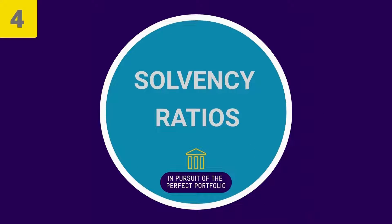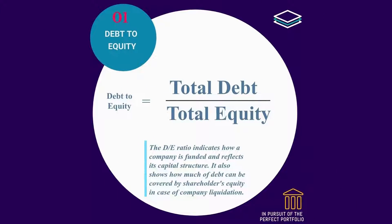Number 4: Solvency ratios. Debt-to-equity ratio is simply equal to total debt divided by total equity. A ratio greater than 1 indicates that the company has more debt capital in comparison to equity share capital, and vice versa. The debt-to-equity ratio indicates how a company is funded and reflects its capital structure. It also shows how much of the debt can be covered by shareholders' equity in case of company liquidation.